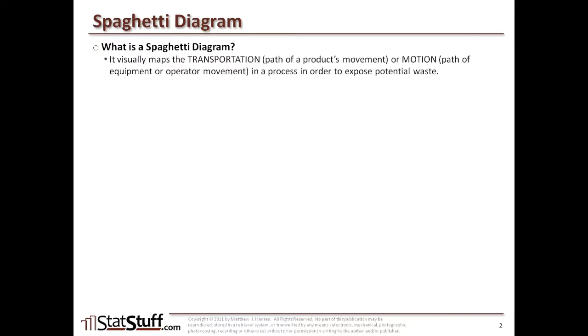The spaghetti diagram is a tool used to help identify two of the seven deadly wastes that we're trying to remove from a process. It visually maps transportation, which is the path of the product's movement, as well as motion, the path of the equipment or operator, those who are not the product themselves but interact with the product.